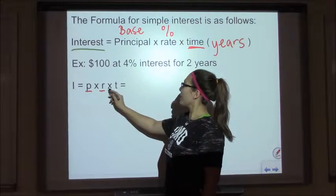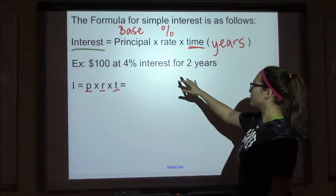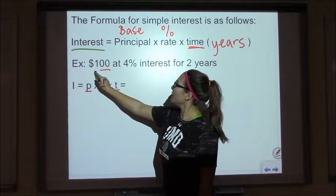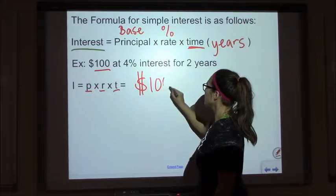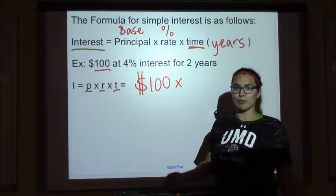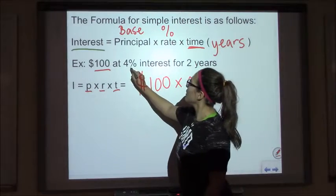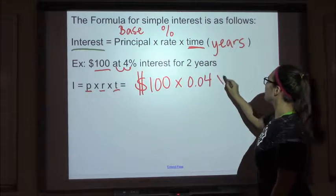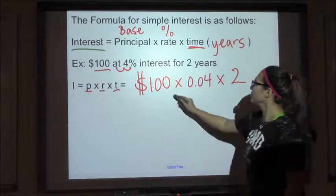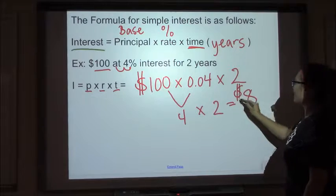So our variables are: P for principal, R for rate, and T for time. In our example, there's a hundred dollars at four percent interest for two years. To find our interest, we take the principal — a hundred dollars — multiply by the rate, four percent, converted to decimal form: 0.04. Then we multiply by time in years, which is two years.